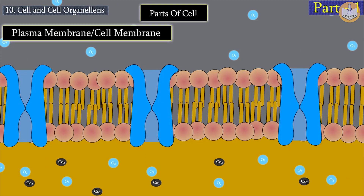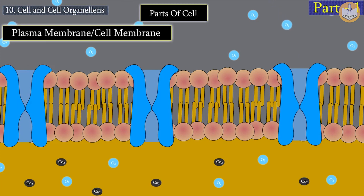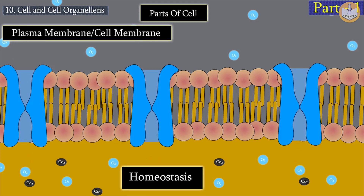Due to this selective permeability, useful molecules of water, salt, and oxygen enter the cell, while CO2 exits the cell. If any changes occur outside the cell, the cellular environment does not change due to the plasma membrane. This condition is called homeostasis.